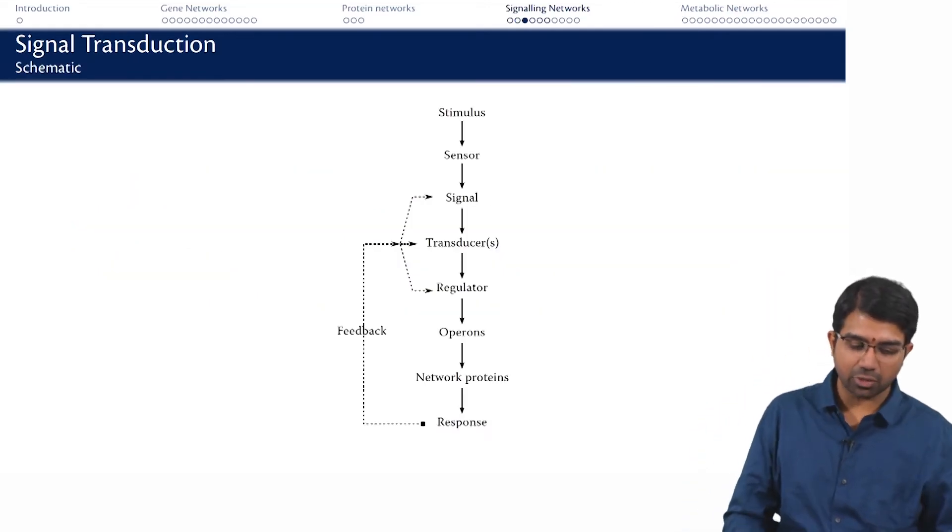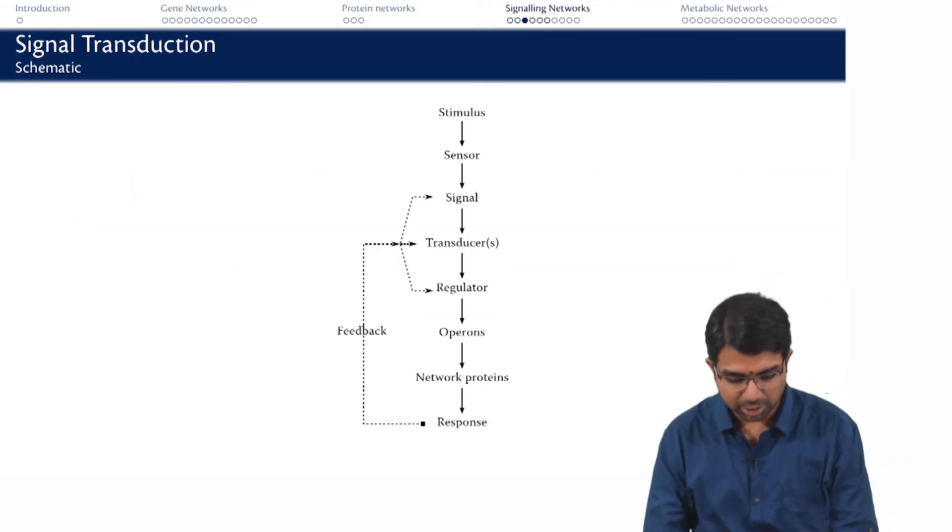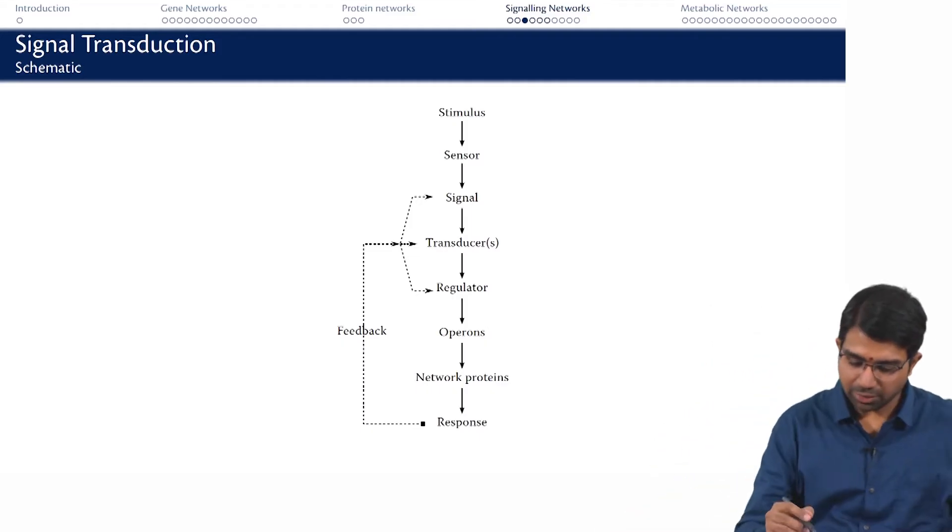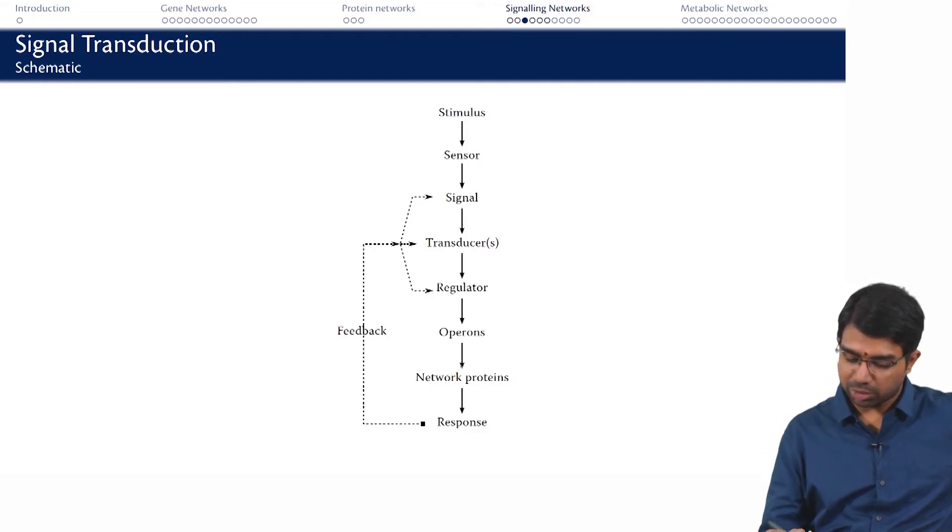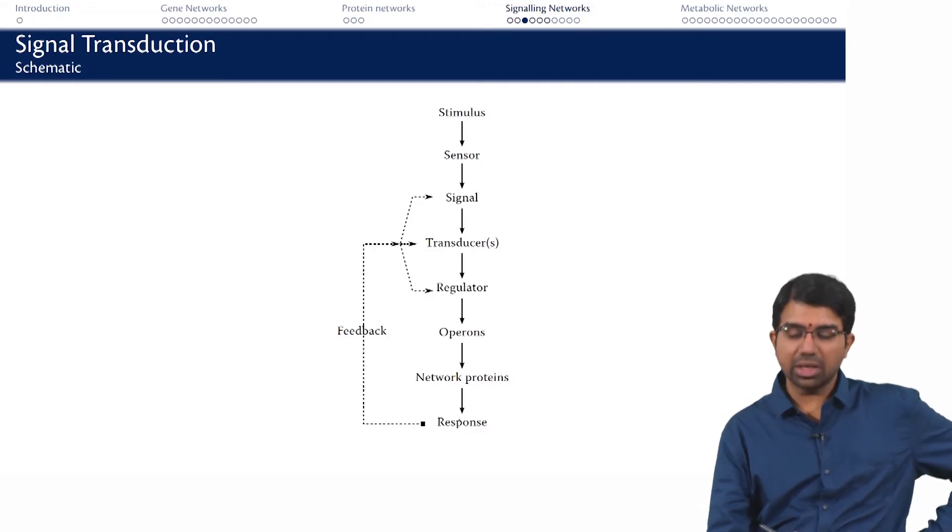This is the schematic for a signaling pathway. You have an extracellular stimulus which is sensed, you need a sensor protein to first sense it, a receptor which produces a signal which is then transduced. There is a regulator, there are multiple operons that may be involved, a network of interacting proteins may be involved, finally giving a response.